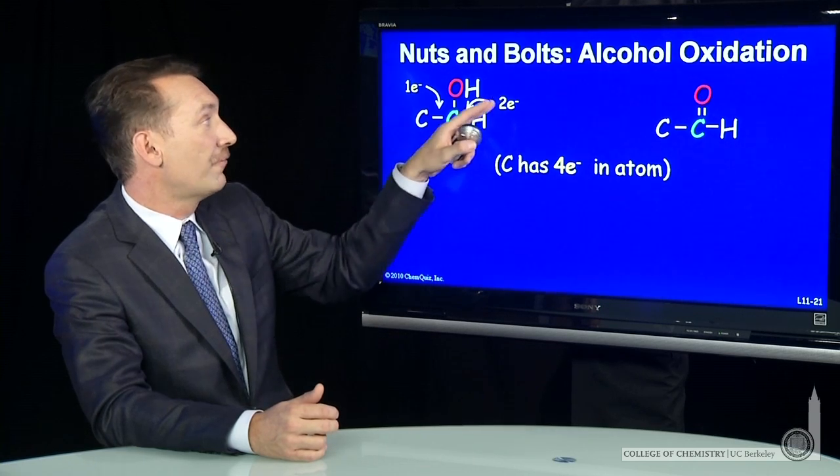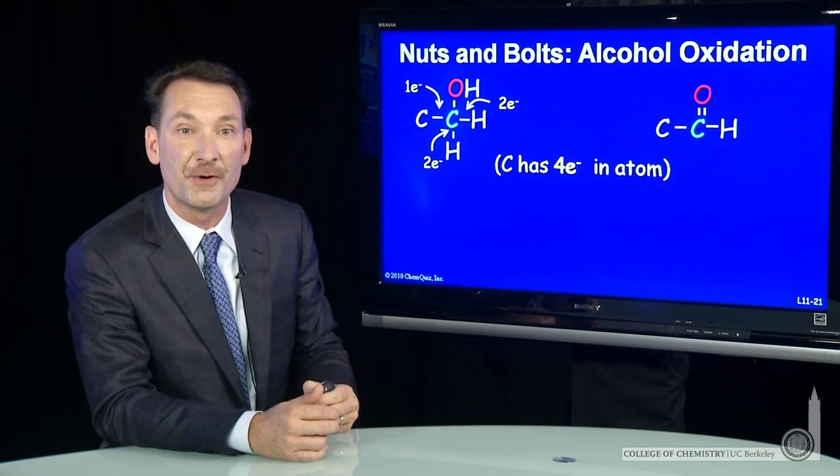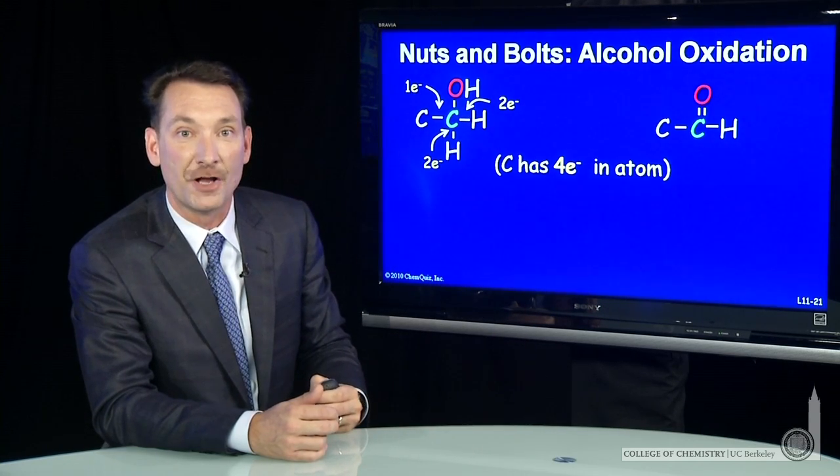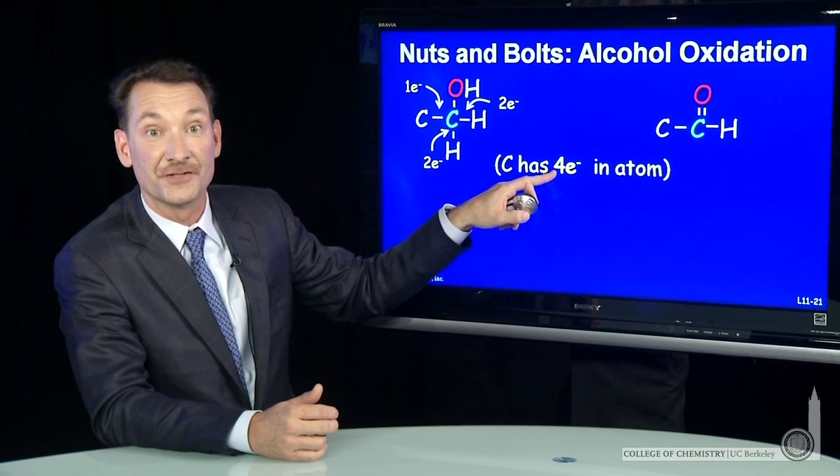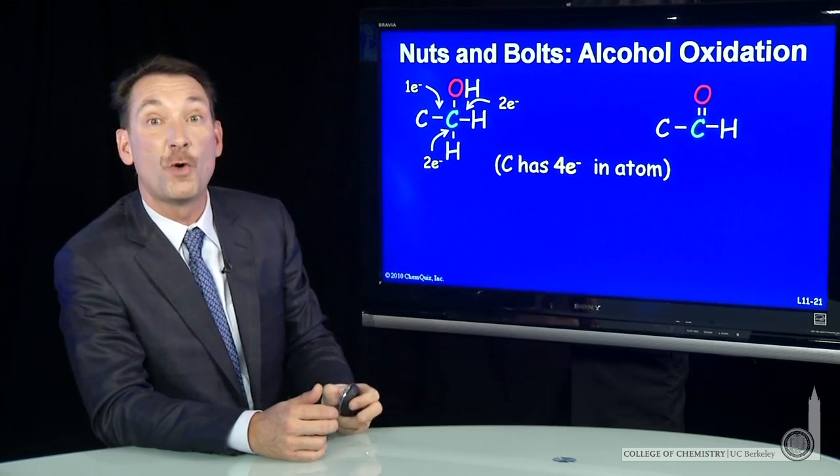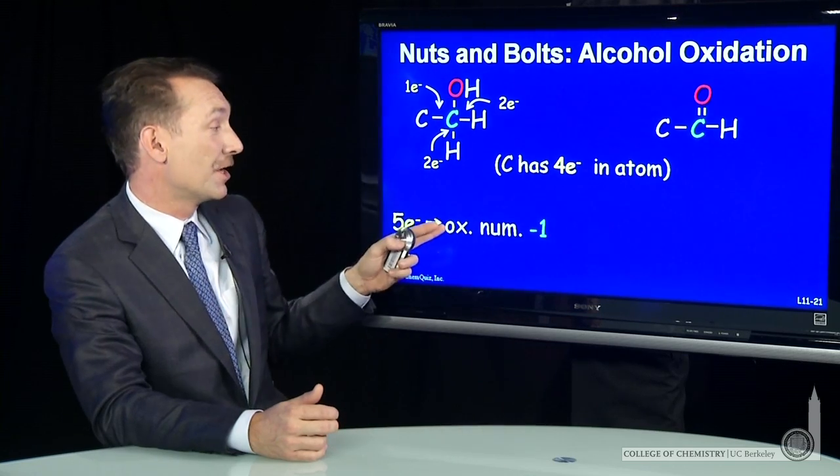So two, four, five electrons around carbon in that molecule. Carbon as an atom has four electrons around it. This carbon has one more than that, so it has an oxidation number of minus one.